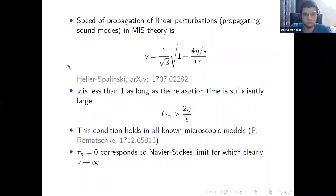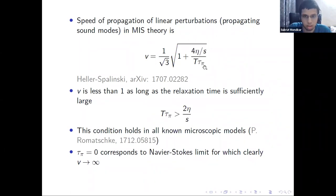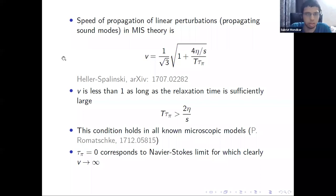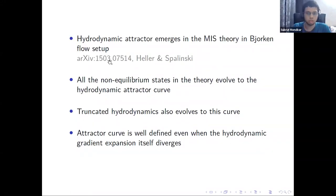The speed of sound in MIS theory is given by an expression where eta is the shear viscosity, tau_pi is the relaxation time introduced as a transport coefficient, and S is the entropy density. This speed is always less than 1 as long as a certain inequality is satisfied by the transport coefficients, and all known microscopic theories satisfy these inequalities. As shown by Heller and Spalinski, the hydrodynamic attractor emerges in MIS theory in a setup called Bjorken flow.